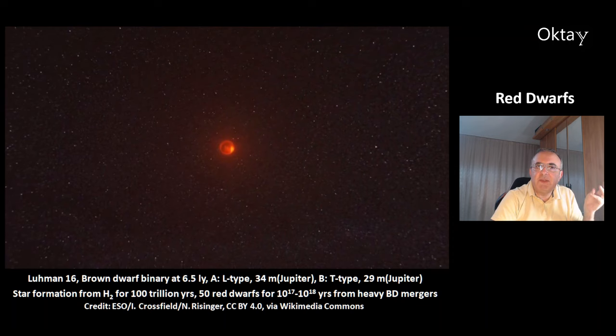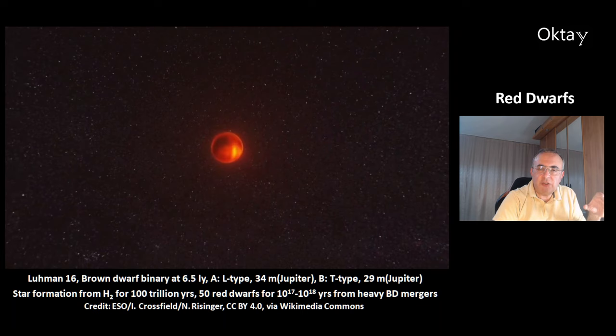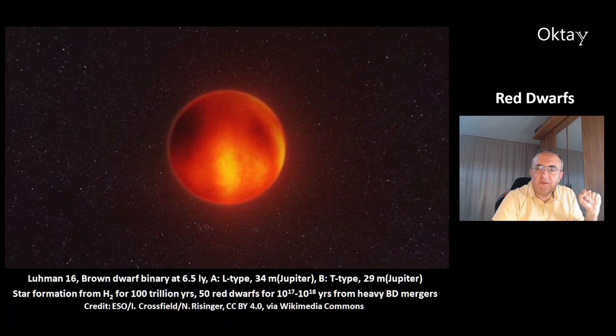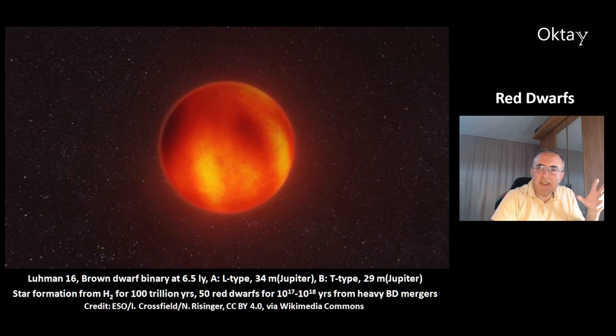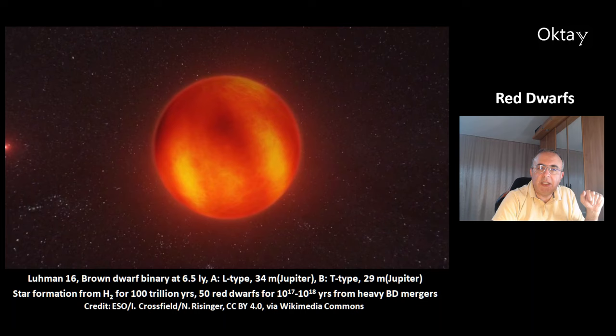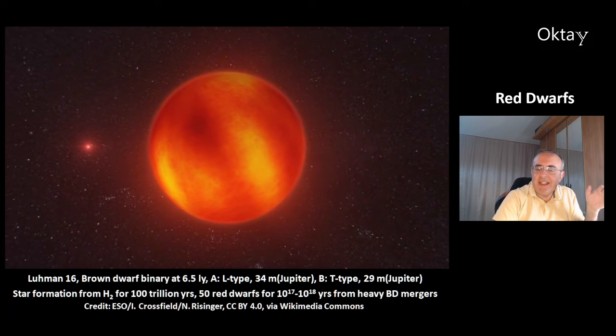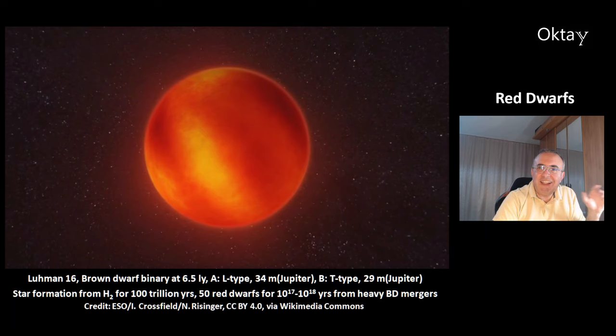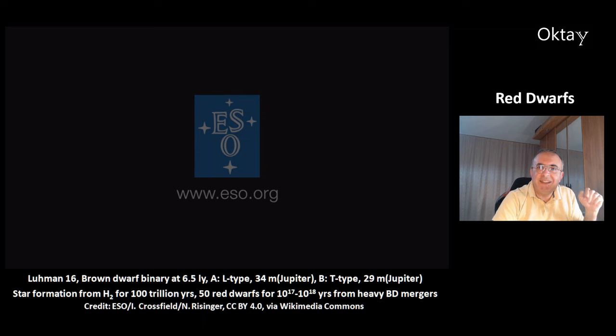Star formation from hydrogen by collapse of gas clouds will continue for 100 trillion years, after which no more hydrogen will be left. But there is another mechanism: the merger of heavy brown dwarfs, which could make approximately 50 new red dwarfs in the entire galaxy possible, according to estimates, over a period of 10^17 to 10^18 years. For this to work, the combined mass of the merging brown dwarfs must exceed 80 Jupiter masses. These 50 dwarfs will be the last stars in the Milky Way galaxy — and that is the far future of red dwarfs in the universe.